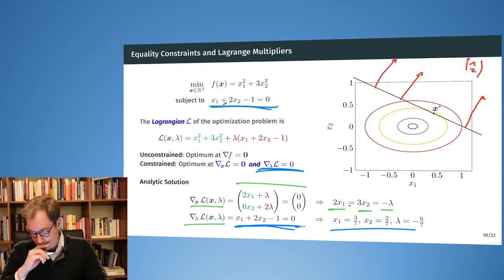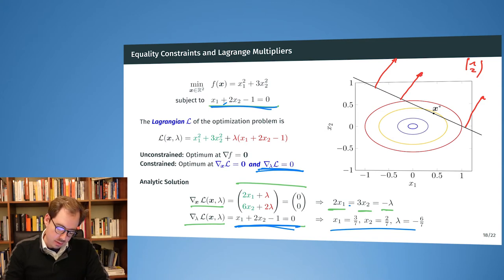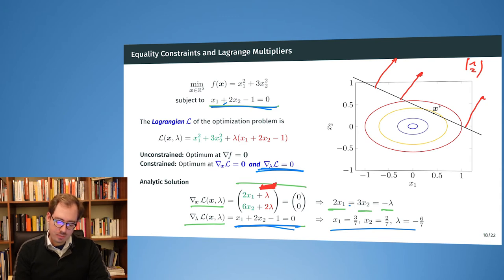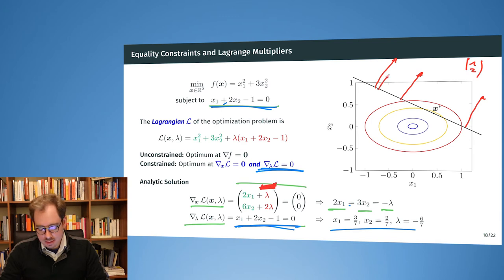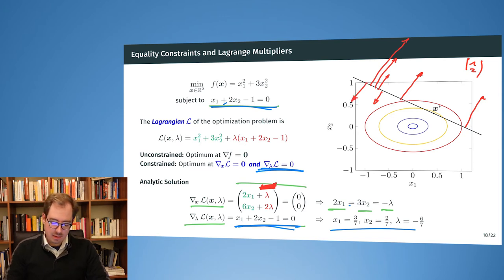If I derive the Lagrangian by x, at the end I will have my original gradient plus lambda, and my original gradient times 2 lambda. Lambda is a scaling factor — depending on how I choose lambda, I get something either very large, small, or pointing in the other direction. But this term always points into the normal direction of the equality constraint.